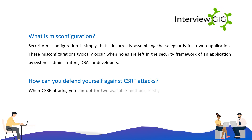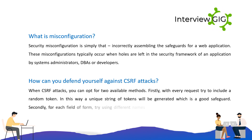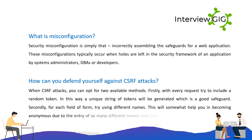How can you defend yourself against CSRF attacks? When dealing with CSRF attacks, you can opt for two available methods. Firstly, with every request try to include a random token — a unique string of tokens will be generated, which is a good safeguard. Secondly, for each field of a form, try using different names. This will help you become anonymous due to the entry of many different names and thus behave as a safeguard from CSRF attacks.